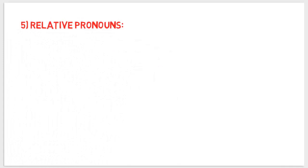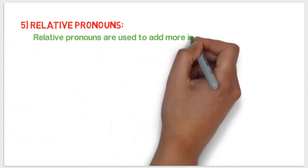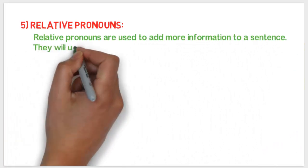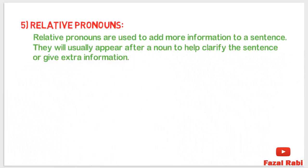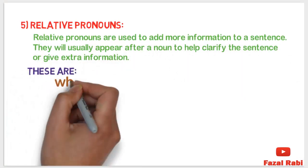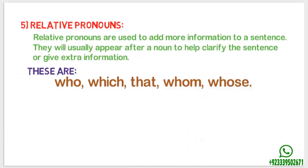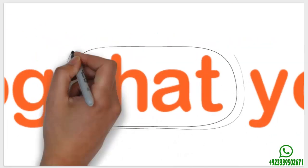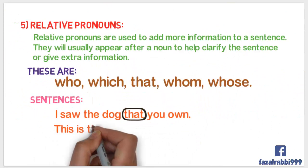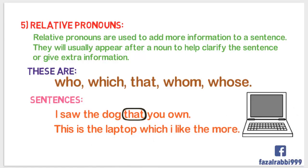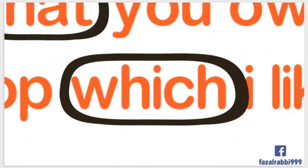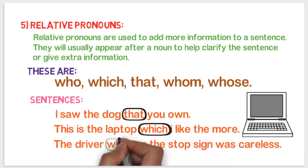Number five: relative pronouns. Relative pronouns are used to add more information to a sentence. They usually appear after a noun to help clarify the sentence or give extra information. These are: who, which, that, whom, whose. For example: 'I saw the dog that you own' — that is a relative pronoun. 'This is the laptop which I like more' — which is a relative pronoun. 'The driver who ran the stop sign was careless' — who is a relative pronoun.